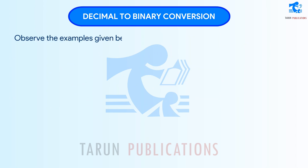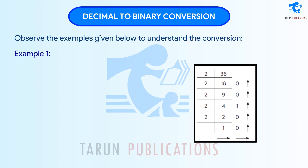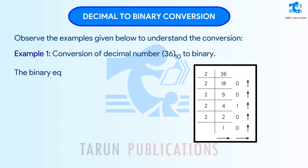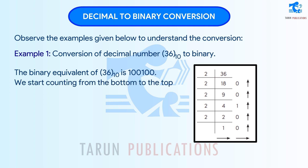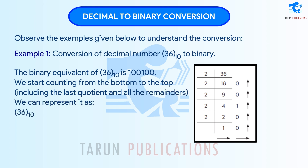Observe the examples given below to understand the conversion. Example 1: Conversion of decimal number 36 base 10 to binary. The binary equivalent of 36 base 10 is 100100. We start counting from the bottom to the top, including the last quotient and all the remainders.